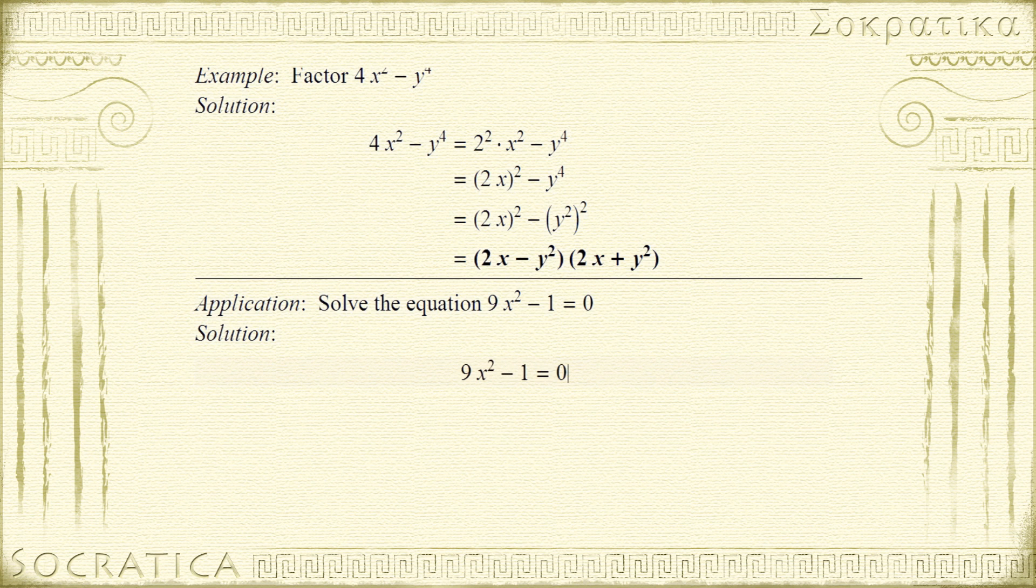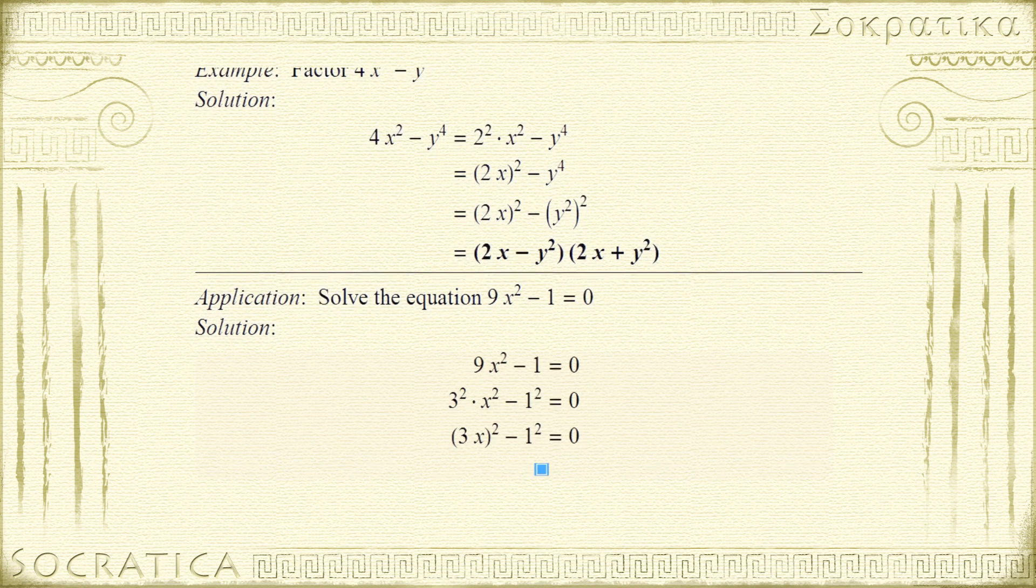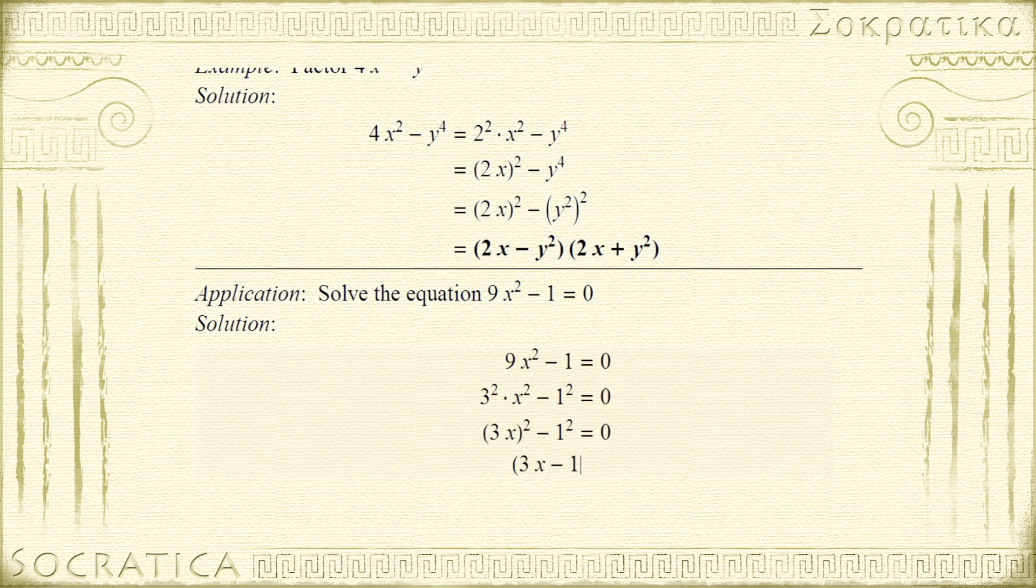9x² - 1. The first term, 9x², can be written as 3² · x². And the 1 can be written as 1². In fact, 1 to any power is 1. So we have 3² · x² - 1² = 0. Let's group the first term a little bit. So we have (3x)² - 1² = 0. Now we can apply the difference of two squares and factor this. That gives us (3x - 1)(3x + 1) = 0.